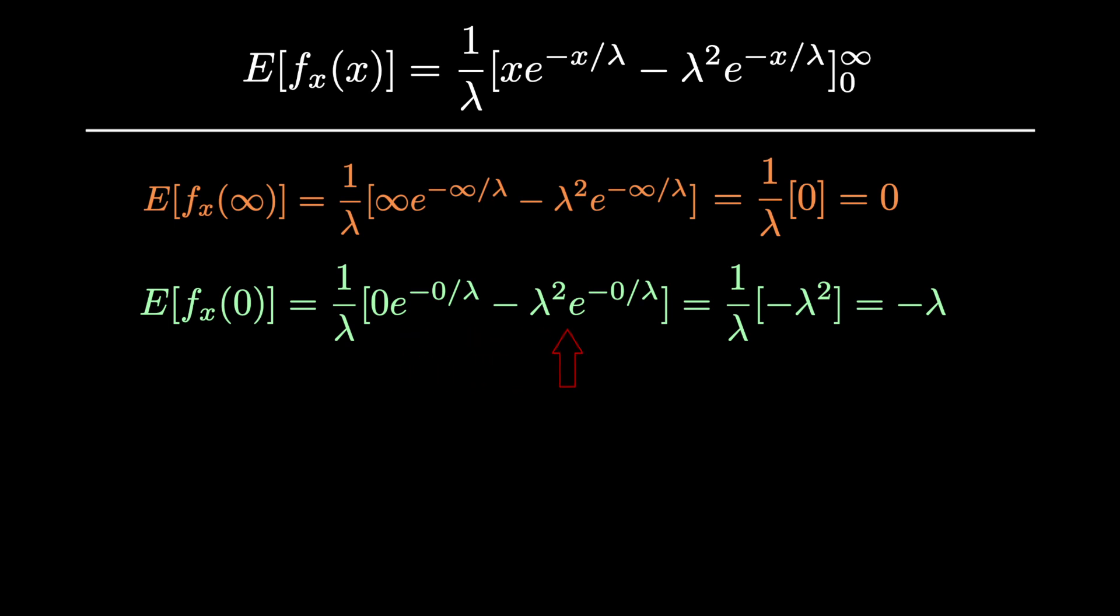lambda squared times e to the negative 0. And anything raised to 0 is equal to 1, so our second part is equal to lambda squared. Then we get 1 over lambda times negative lambda squared equals negative lambda.